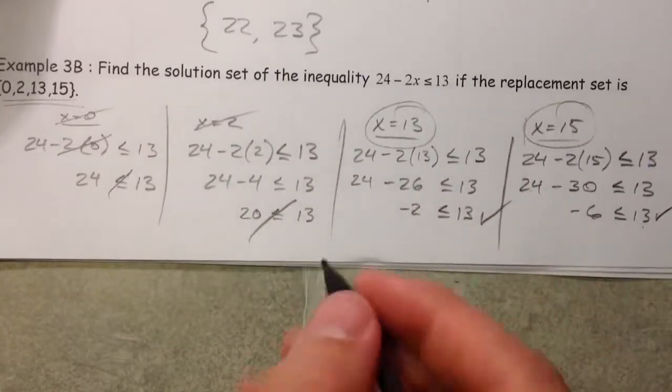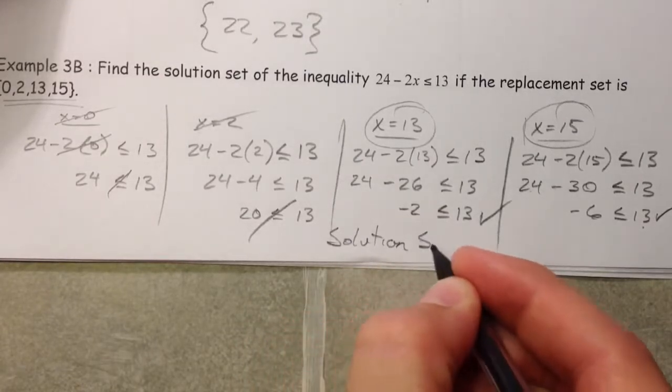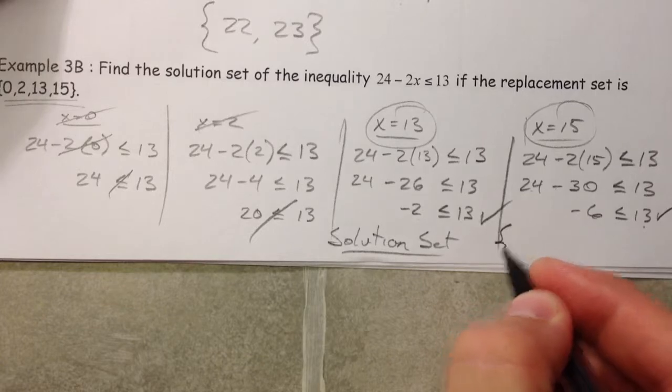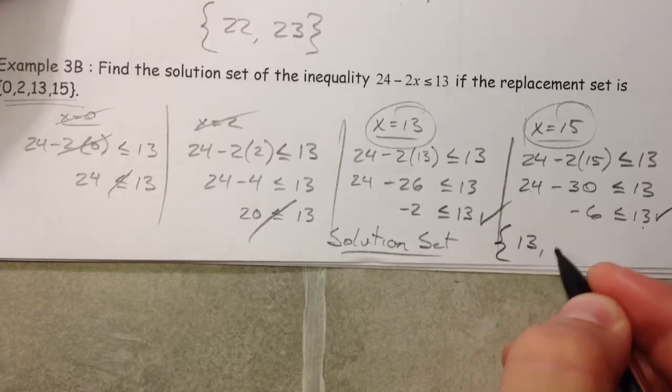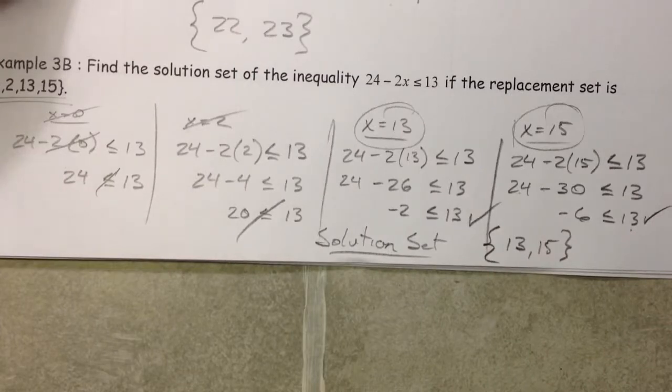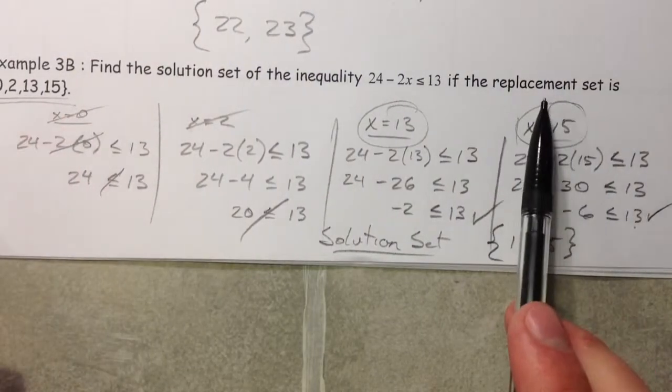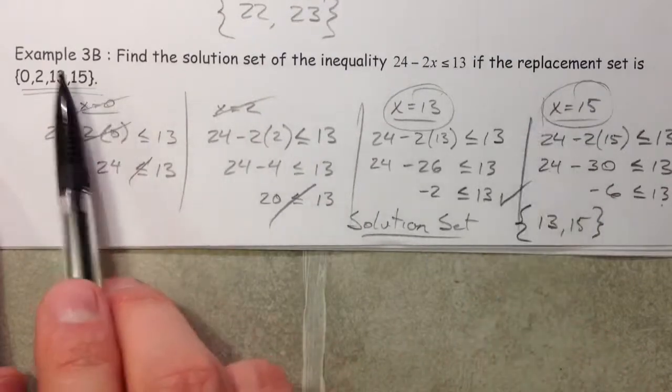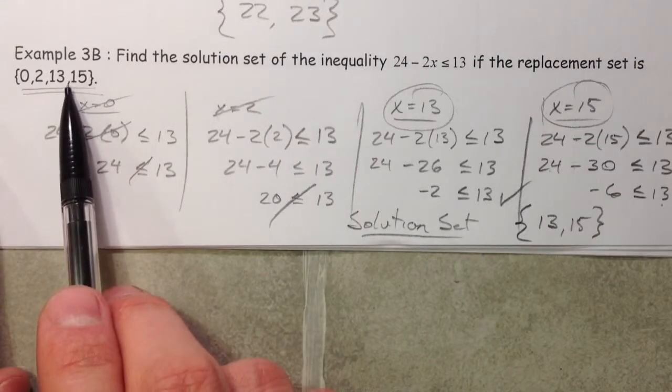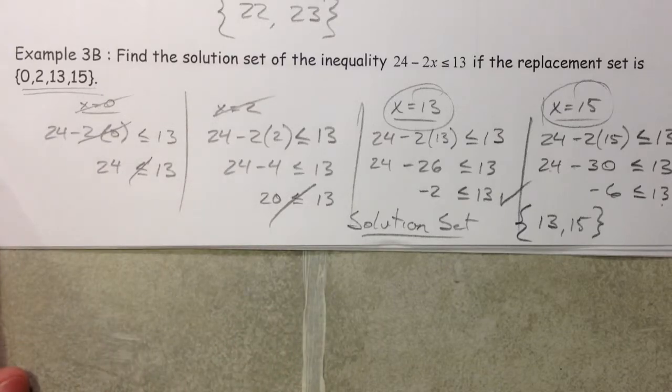So, our solution set is our 13 and our 15. And, yes, technically, there are many, many, many, infinitely many more solutions to that. However, our replacement set that we said we were plugging in was full of these elements. And so, that's why we're not going to do it.